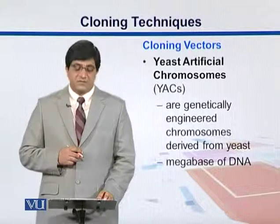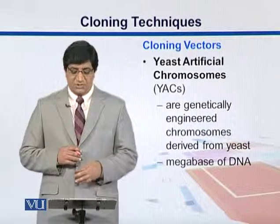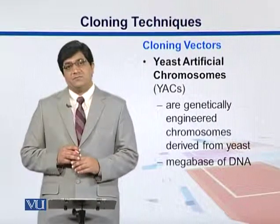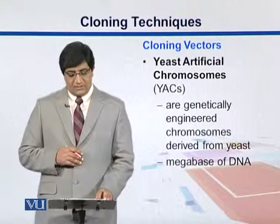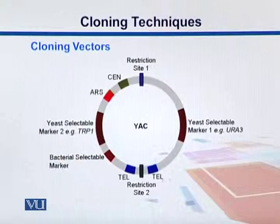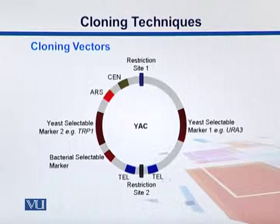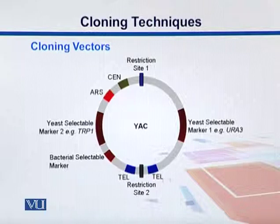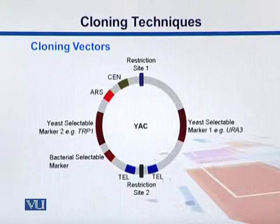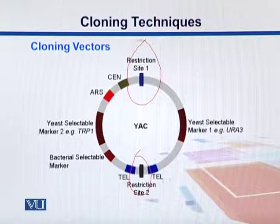For larger fragments, there are genetically engineered chromosomes from yeast — yeast artificial chromosomes, or YACs — which can take large insert sizes. Here is an example of a yeast artificial chromosome. We can have some markers coming from yeast and also some bacterial parts. There are restriction sites which are the sites where enzymes can cut, and we can cut the gene of interest with the same enzyme and insert it there.